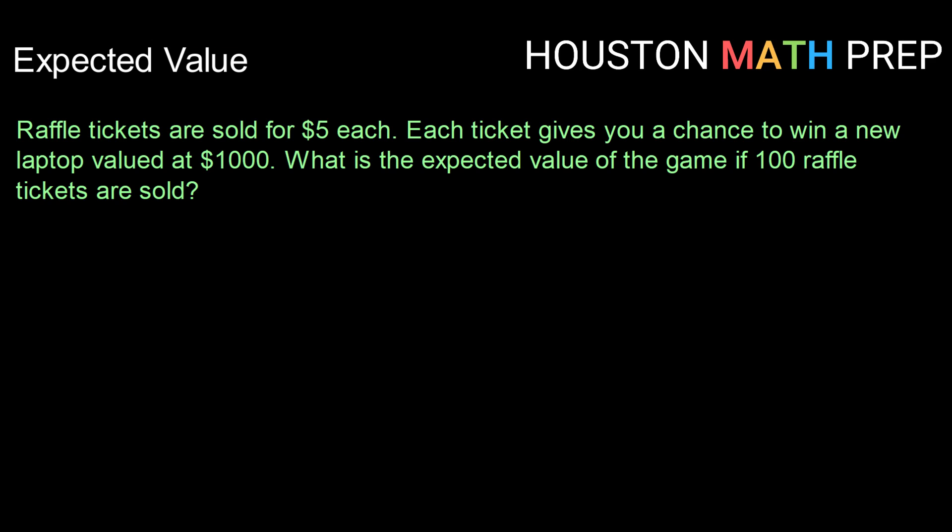Sometimes we want to calculate expected value when we aren't explicitly given the distribution — what we're given instead is enough information to create it. Let's say raffle tickets are sold for $5 each, and each ticket gives you a chance to win a new laptop valued at $1,000. What is the expected value of the game if 100 raffle tickets are sold?